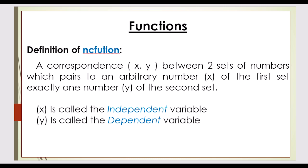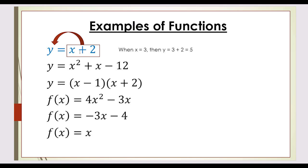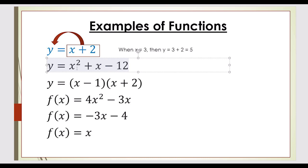Let's look at some examples of functions. Here you can see y = x + 2. That means when x = 3, we put x = 3 into this function and get 3 + 2, so the y value equals 5. That's why y is called the dependent variable — because y is dependent on the value of x. The other function is y = x² + x − 12. When x = 1, we put 1 into 1² + 1 − 12, which gives 1 + 1 − 12 = −10. So when x = 1, y = −10. Y is dependent on the value of x — this is a function.